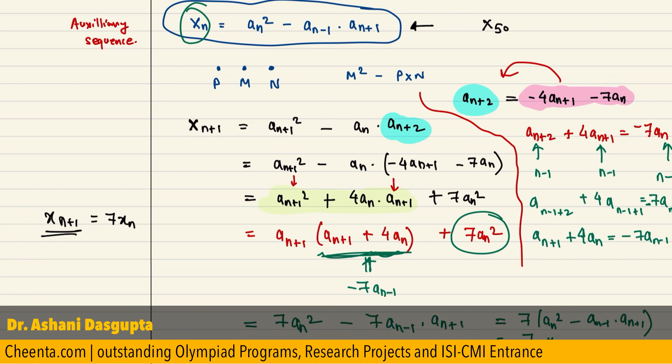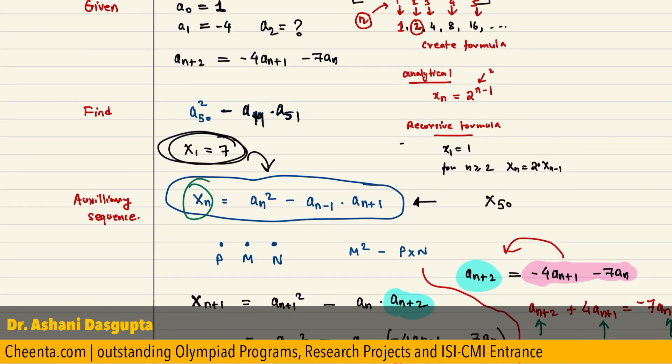So, if x(n+1) is 7 times xn, then x50 is simply 7 to the power 50. Actually, the question asks, how many divisors are there of this number of x50 or how many divisors are there of this thing?